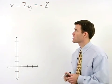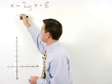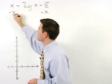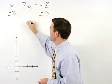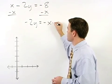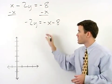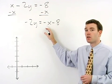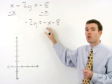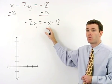So to start things off, let's subtract x from both sides of the equation to get negative 2y equals negative x minus 8. Remember to put your x term first on the right side of the equation so that it will eventually match up with y equals mx plus b form.